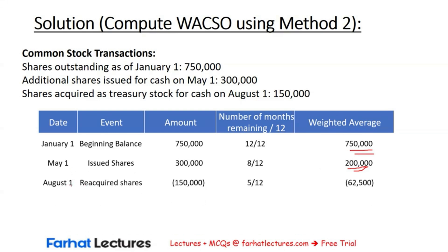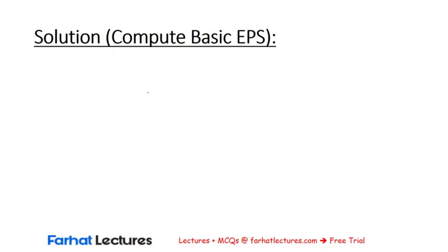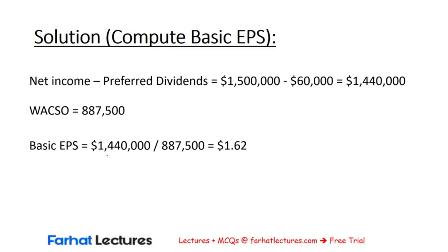The third weighted average covers the event on August 1st. We deal with the change, which is minus $150,000. Five months remain — August through December — so we multiply by 5 divided by 12. That gives us minus $62,500. Finally, summing up the weighted averages gives us the same result as the first method: $887,500. Notice that in this method, the numerators of the fractions do not add up to 12. We can now compute the basic EPS by dividing the numerator of $1,440,000 by the WACSO of $887,500. The basic EPS is $1.62.